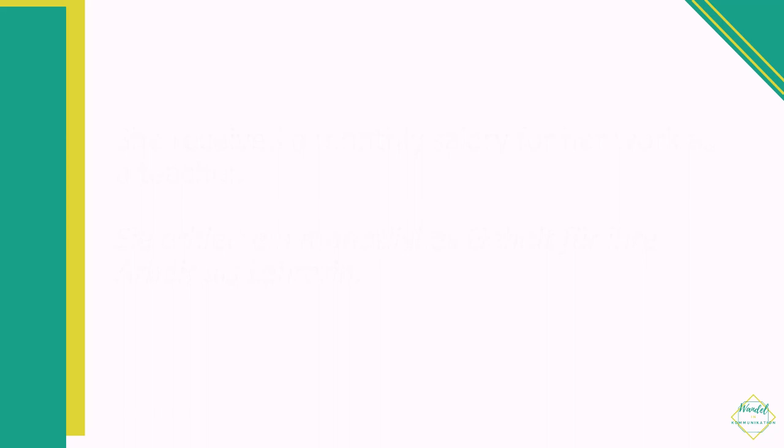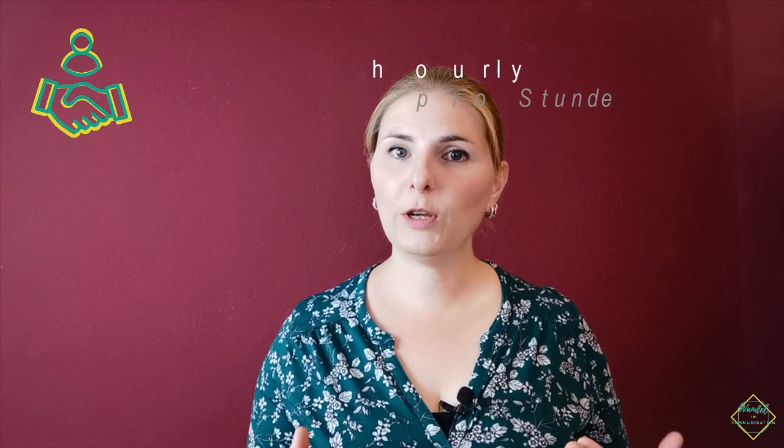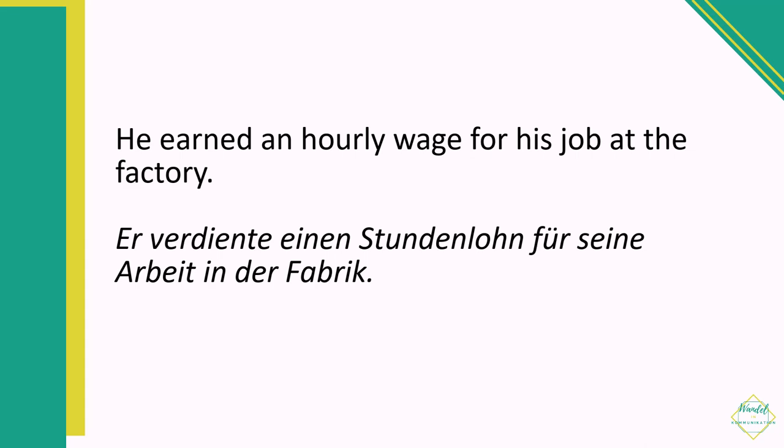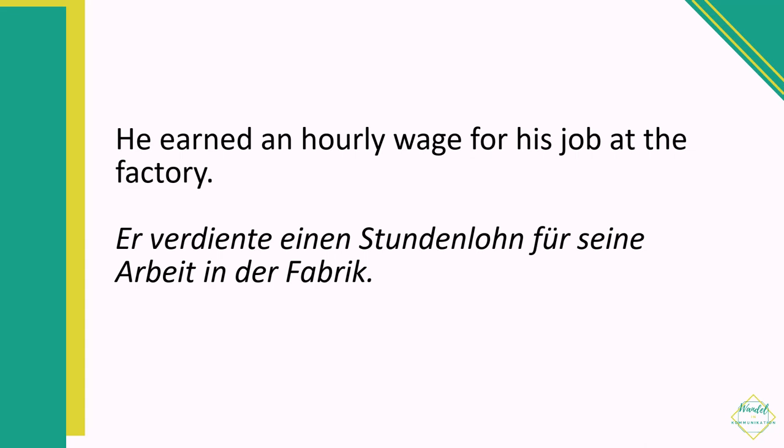And we are moving on to our last category: category number five, money exchange in the workplace. If you have a regular job, you go to work and monthly you get money — this is called a salary, das Gehalt. For example: 'She received a monthly salary for her work as a teacher.' If on the other hand you work in a job which pays less or you are paid hourly, this would be called a wage, der Lohn. Minimum wage in English is Mindestlohn in German. For example: 'He earned an hourly wage for his job at the factory.'